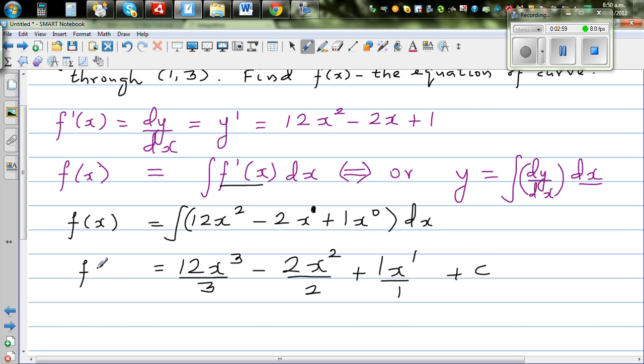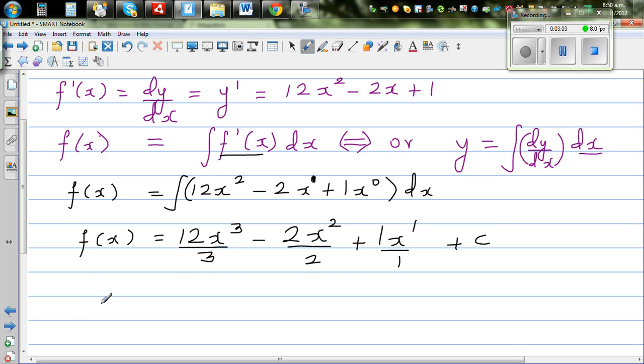So f(x). This is not a function still. This is a family of functions. So f(x), which is a family of functions yet now, still now, so this is 4x³ - x² + x + c. Now we need to find out what c is.